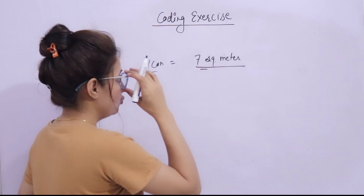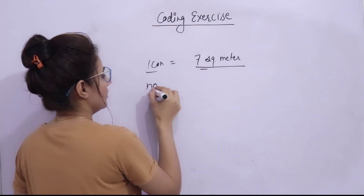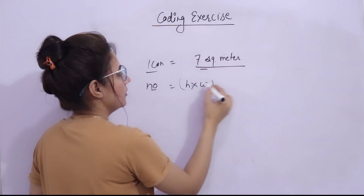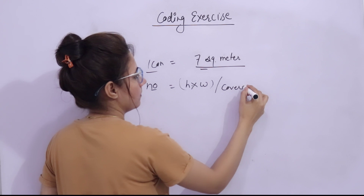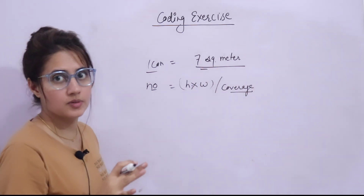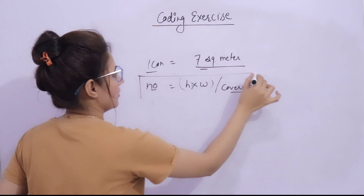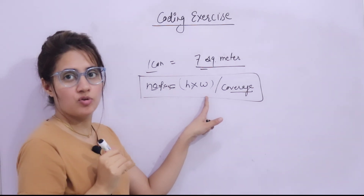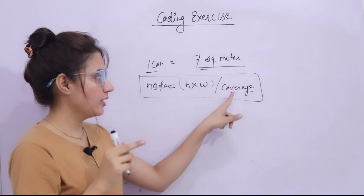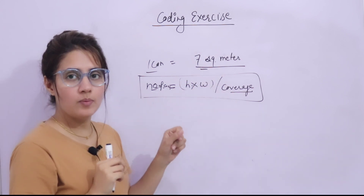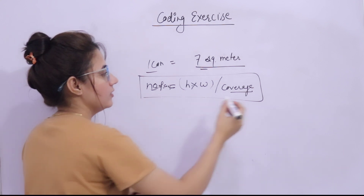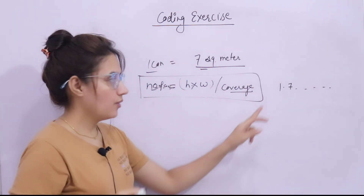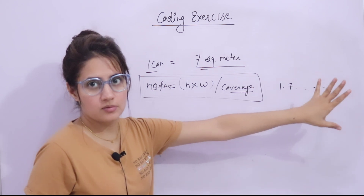The formula is: number of cans needed equals height multiplied by width, divided by the coverage. Coverage means seven square meters. So you apply this formula — area is height into width, then divided by the coverage of seven square meters. But the problem is that you will get a decimal result like one point seven something.